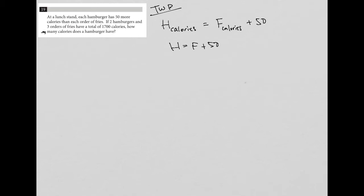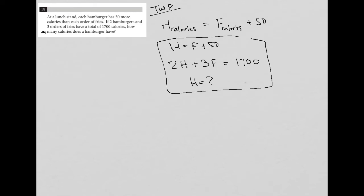The next sentence says, if two hamburgers and three orders of fries have a total of 1,700 calories — that means 2H plus 3F equals 1,700. How many calories does a hamburger have? So the question becomes: what is H? This represents the entire translation of the question. I no longer have to go back and read the question because I've completely translated it.